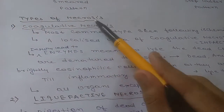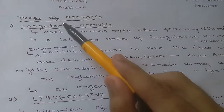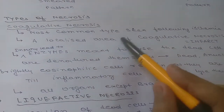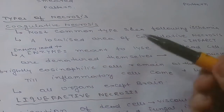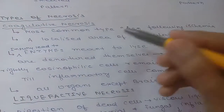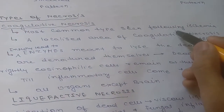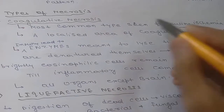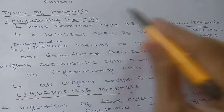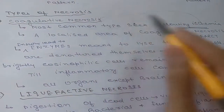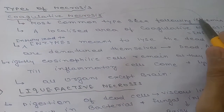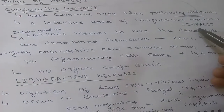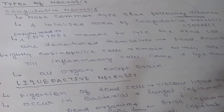Now we will look at types of necrosis. The first is coagulative necrosis, which is the most common type. It is associated with ischemia. A localized area of coagulative necrosis is also known as an infarct.